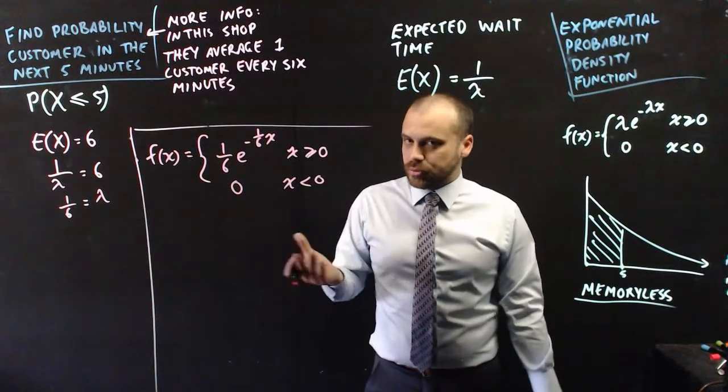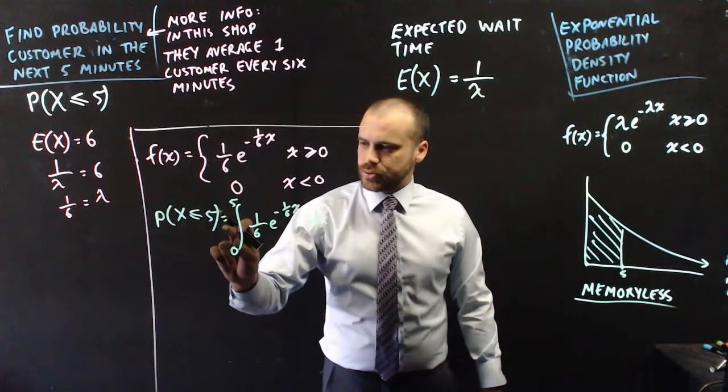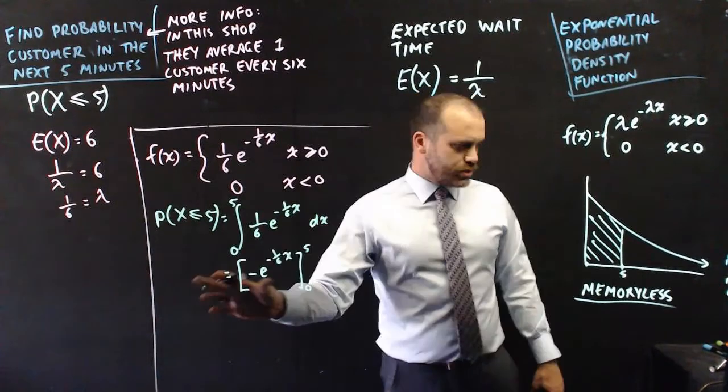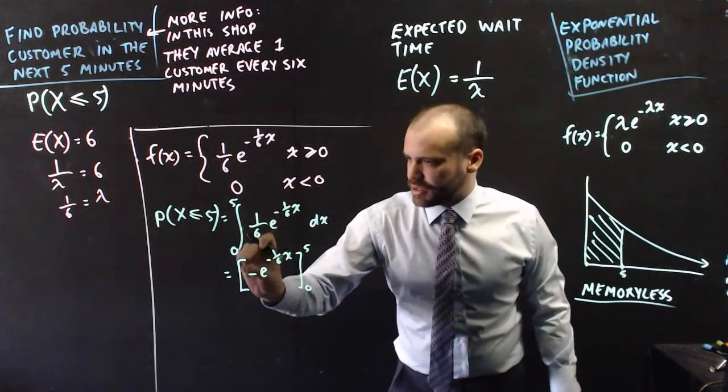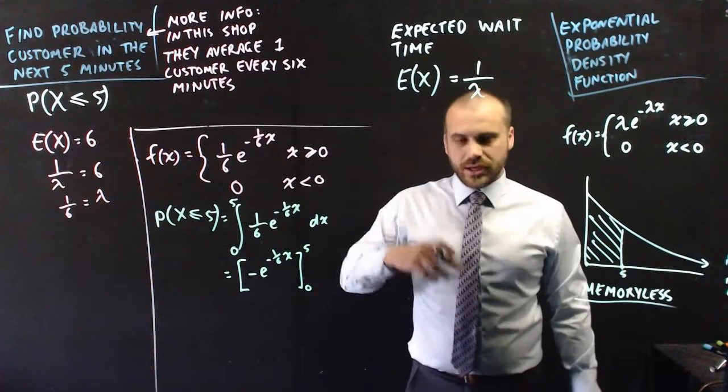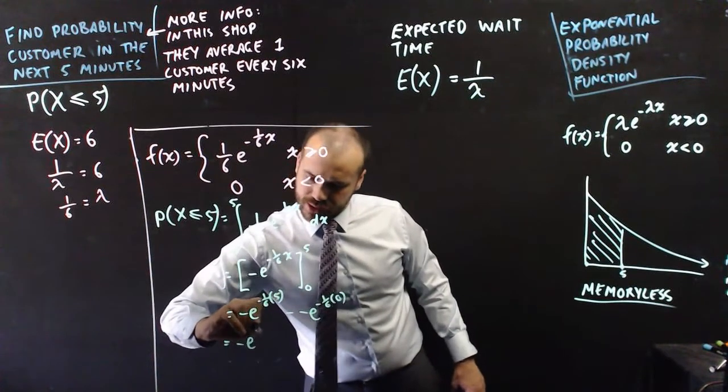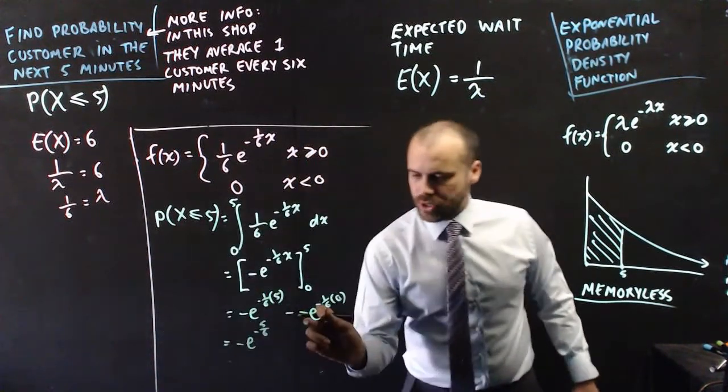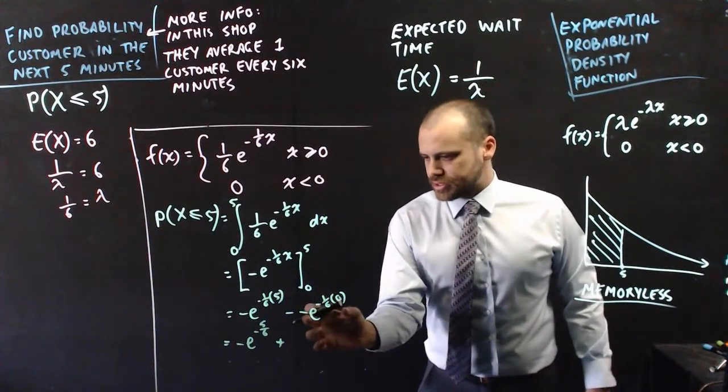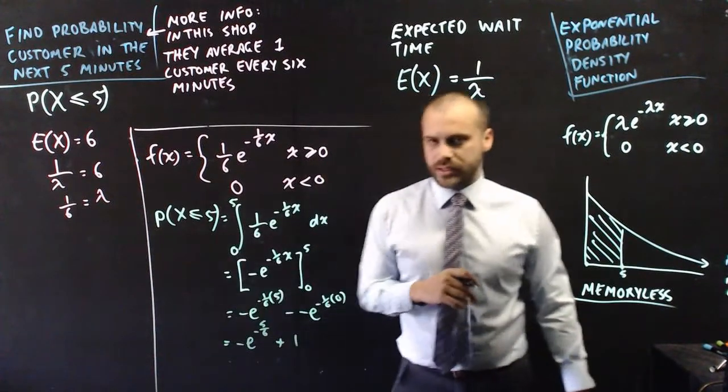And then we just do what we normally do when it comes to probability density functions. So the probability that x is less than or equal to five is equal to the integral between five and zero of this function here. I found the integral here one sixth divided by negative one sixth makes negative one. So negative e to the negative one sixth x between five and zero. Now we just sub in five and zero. Now when we do that what do we get? We get negative e to the negative five sixth minus minus so that's plus and then that's e to the negative one sixth times zero so that's going to be e to the zero which is going to be one so plus one here.